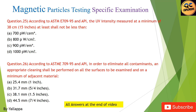Question 26: According to ASTM E709-95 and API, in order to eliminate all contaminants, an appropriate cleaning shall be performed on all surfaces to be examined and on a minimum of adjacent material of: (A) 25.4 mm; (B) 31.7 mm; (C) 38.1 mm; (D) 44.5 mm.